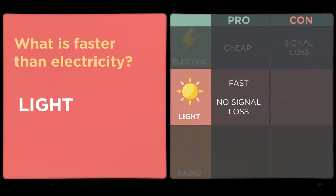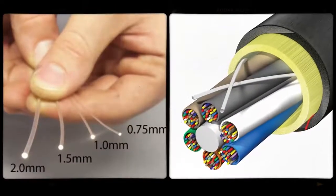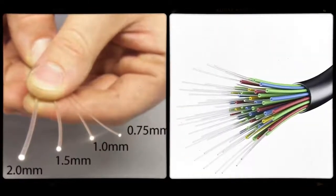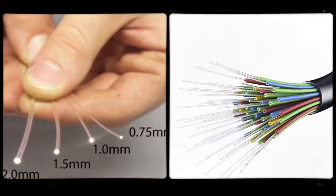We can actually send bits as light beams from one place to another using a fiber optic cable. A fiber optic cable is a thread of glass engineered to reflect light.